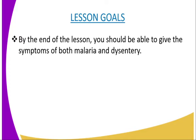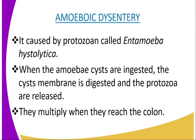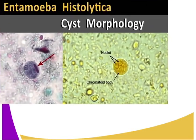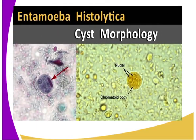In protozoan diseases, the first disease we are going to look at is amoebic dysentery. Amoebic dysentery is a disease caused by the protozoan called Entamoeba histolytica. I want us to look at the Entamoeba histolytica in the form of a diagram, which is now on our screen.